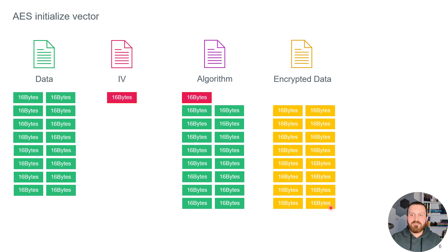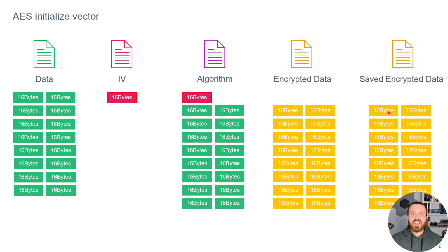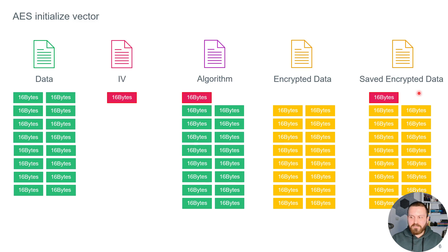After encryption we have exactly the same number of blocks, and the IV is not included in the encrypted result. For decrypting we need this IV as well. Should we share the key and IV with whoever needs to decrypt? No, we shouldn't. Mostly we save the IV at the beginning of the encrypted data array. We place the IV at the beginning of the array — we know that the first 16 bytes of this data are the IV and the rest is the actual encrypted data.